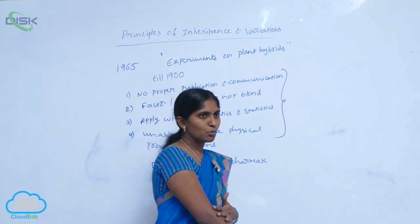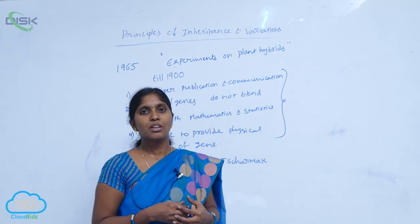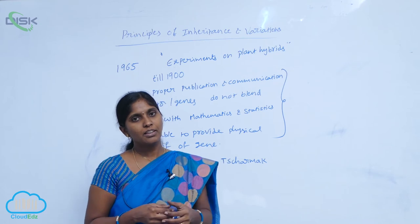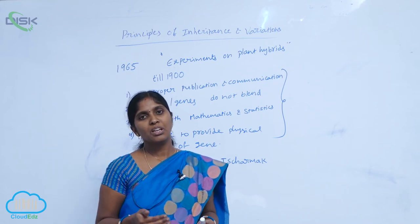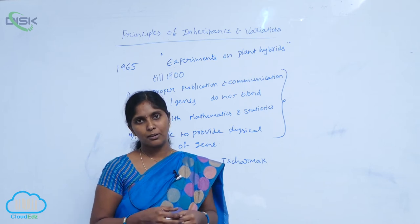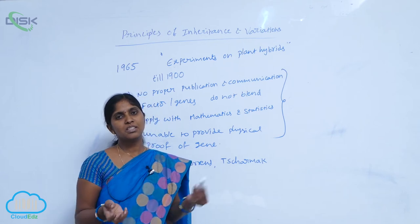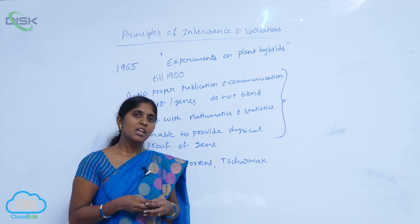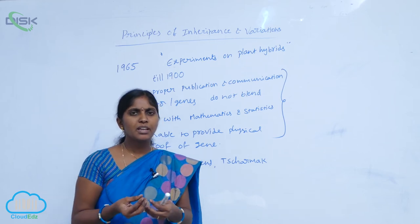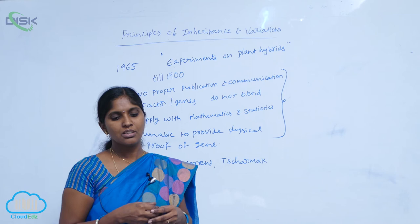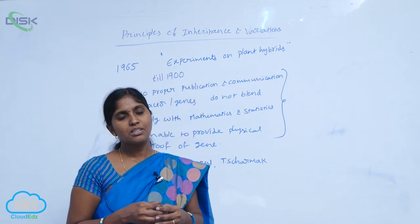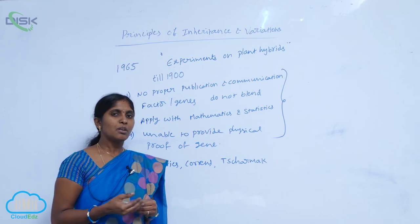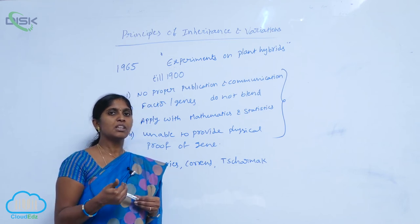After the discovery of chromosomes, scientists Sutton and Boveri worked on chromosomes and concluded that chromosome behavior is parallel to the behavior of genes postulated by Mendel. This showed a similarity between Mendel's genes and chromosomes present in the cell. Using Mendelian inheritance principles along with chromosomal behavior, they postulated a new theory.